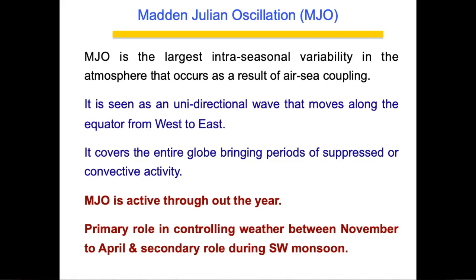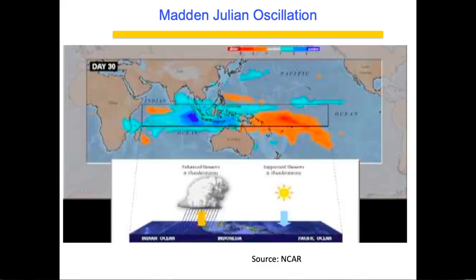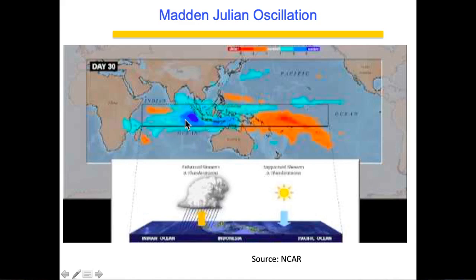MJO is seen as a movement of a unidirectional wave moving from west to east. This wave pattern moves from west towards east — blue indicates the enhanced phase of MJO and red is the suppressed phase. During the enhanced phase it is wet; during the suppressed phase it is dry. This is seen in the form of convective thunderclouds or rain-bearing clouds, which are a result of MJO movement close to the equator.